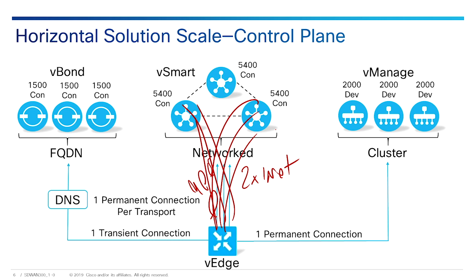Each vBond scales up to 1,500 connections each. If you need more than one vBond, DNS load balancing is required — you'll have to do that externally through a DNS load balancer. On the vEdge routers, you can configure a fully qualified domain name for vBond, the same as on the vSmart controllers, and let DNS balance between the vBond servers.